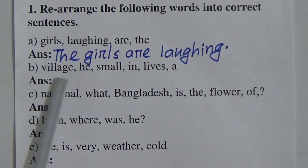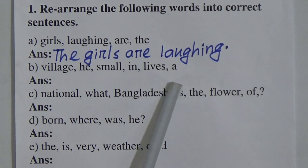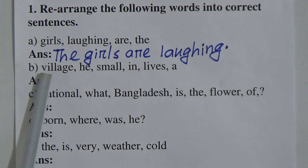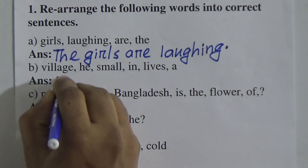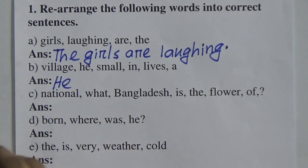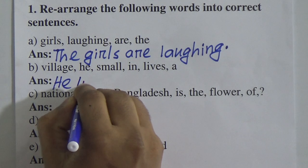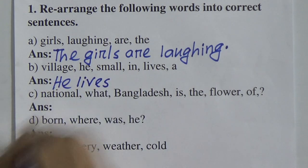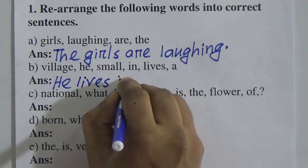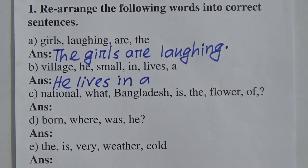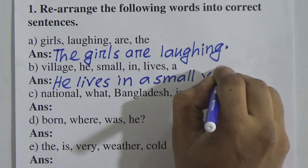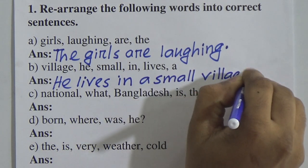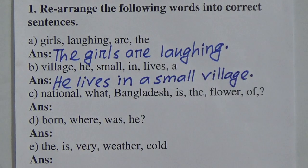Number B: 'village, he, small, in, leaves, a.' This is an assertive sentence. We take the subject first — he is the subject, capital H. Then the main verb: leaves. He leaves — then the preposition: in — a small village. He leaves in a small village. At the end, we give a full stop.